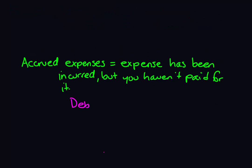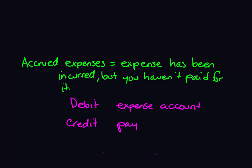So going back to our definition of accrued expenses — an expense that has been incurred but you haven't paid for — these always end up with two types of accounts. You're going to end up with a debit to an expense account and a credit to a payable account.